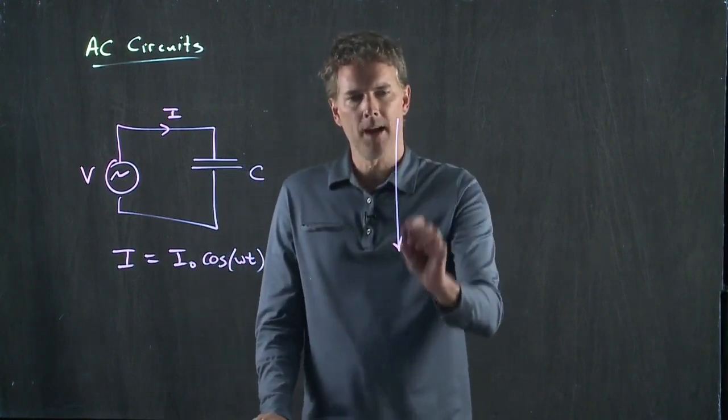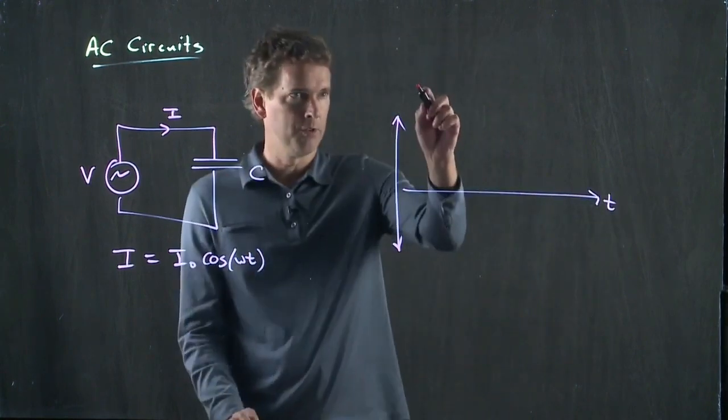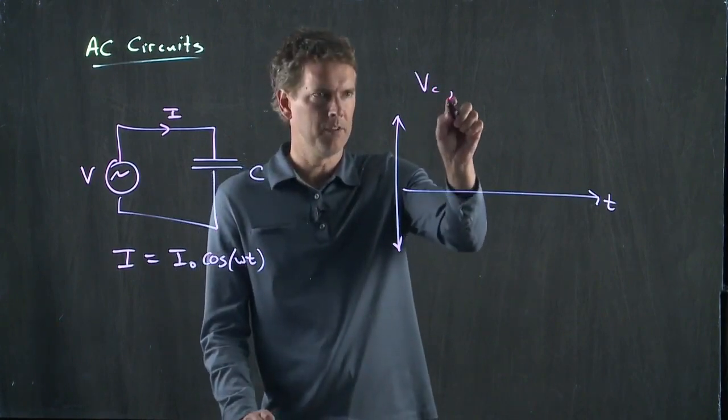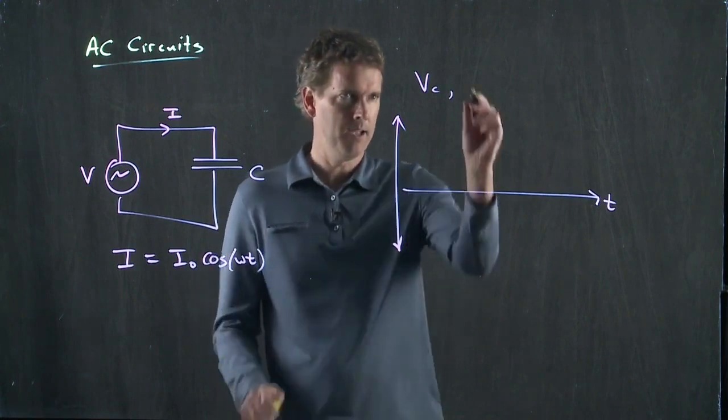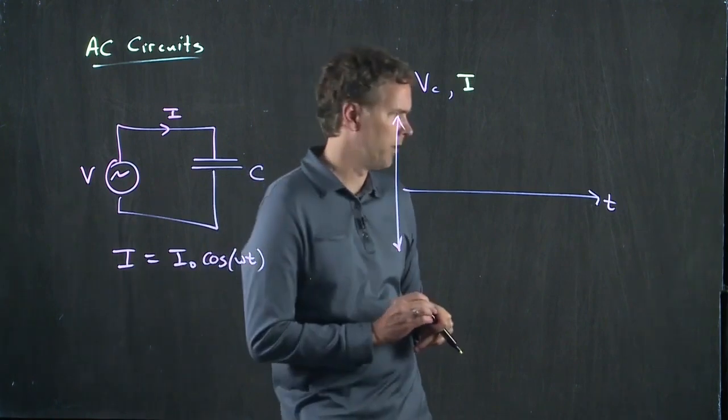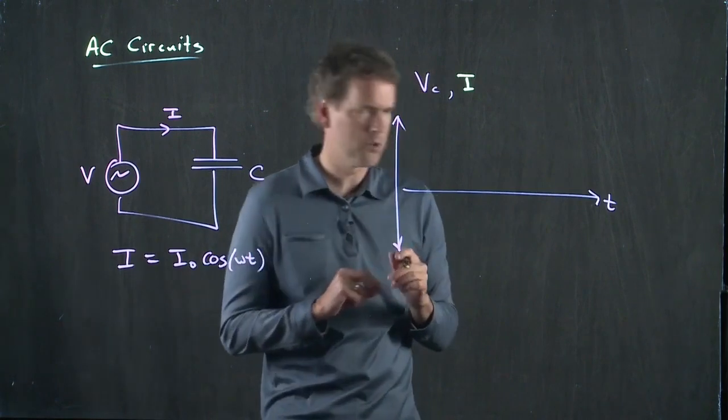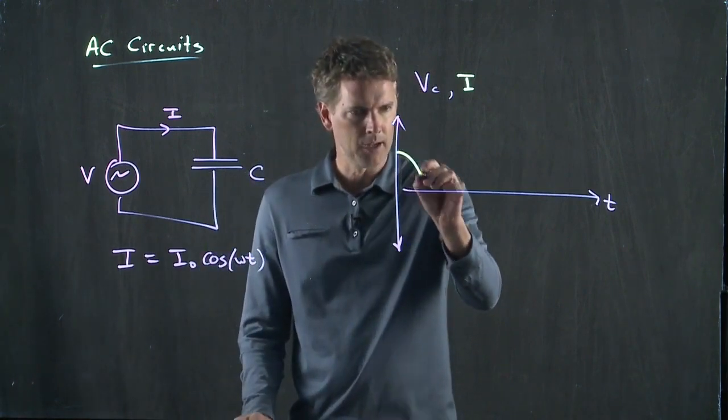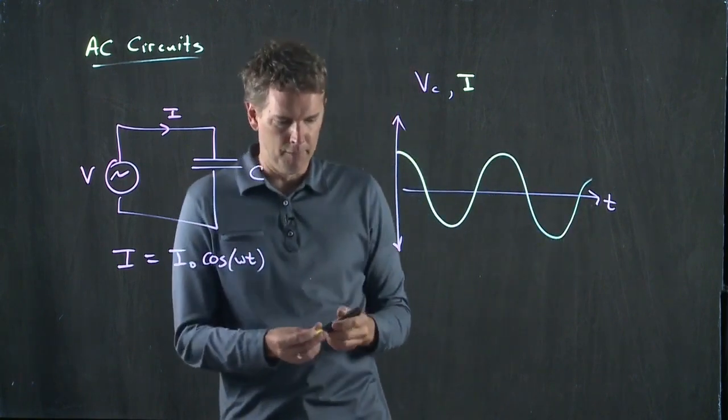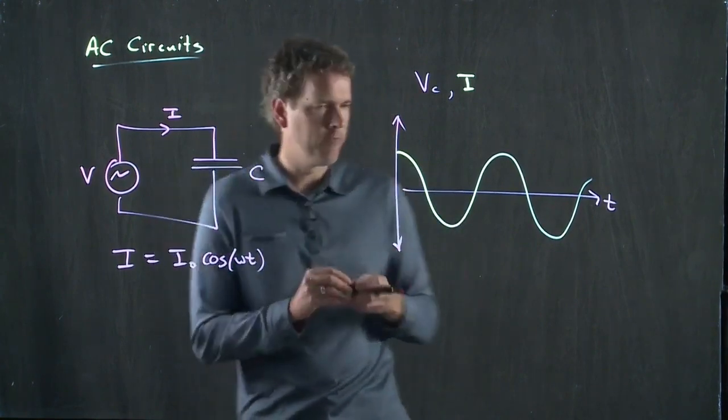So if we plot out, as a function of time, the voltage drop across the capacitor, and I want to make sure I get the colors right here, V sub C and I, the current in the system, what does it look like? And I'm looking at the book in figure 2141, just to make sure that we're consistent. We know that I goes like a cosine.